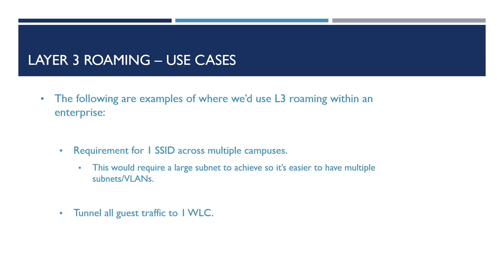In addition to this, as we discussed previously, a good use case for using Layer 3 roaming is the ability to tunnel all traffic from an SSID to a single wireless controller for security reasons. As used in the example before, this could be our guest network traffic tunneled back to a controller within our DMZ network.